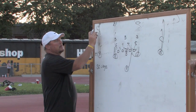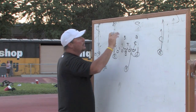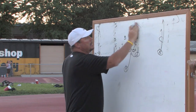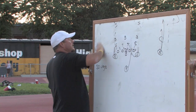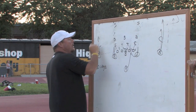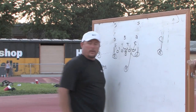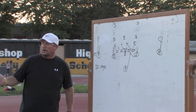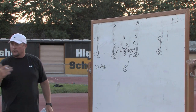Now you've got DBs — one, two, three, four — and you see a safety deep, a safety deep, a corner up, and a corner up. What are they in? So tell me the whole thing. They're in four-three, cover two.